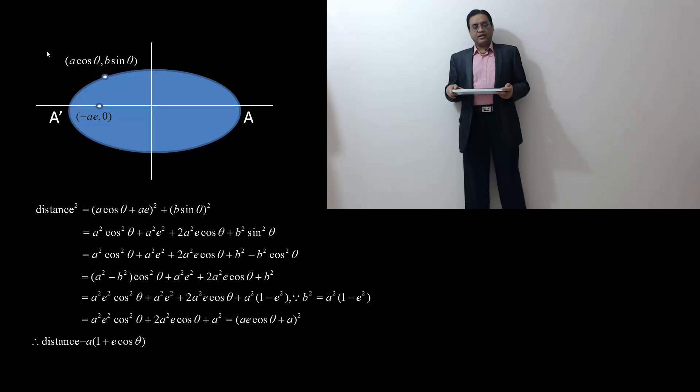Cos θ has maximum value equal to 1, and that happens at θ = 0. θ = 0 corresponds to point A. The point A corresponds to greatest distance.